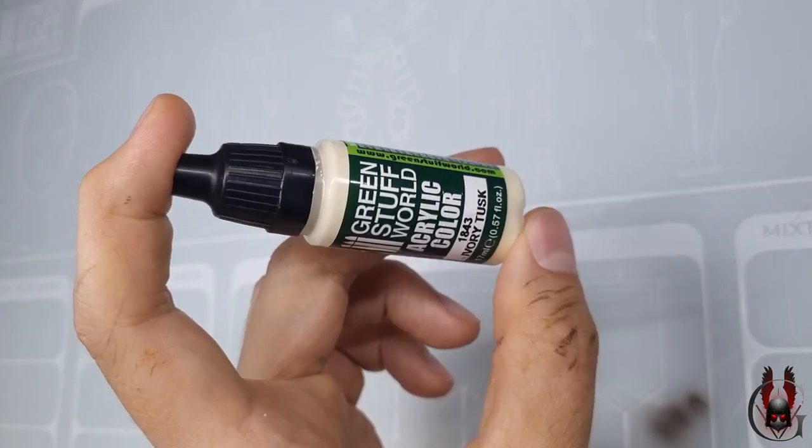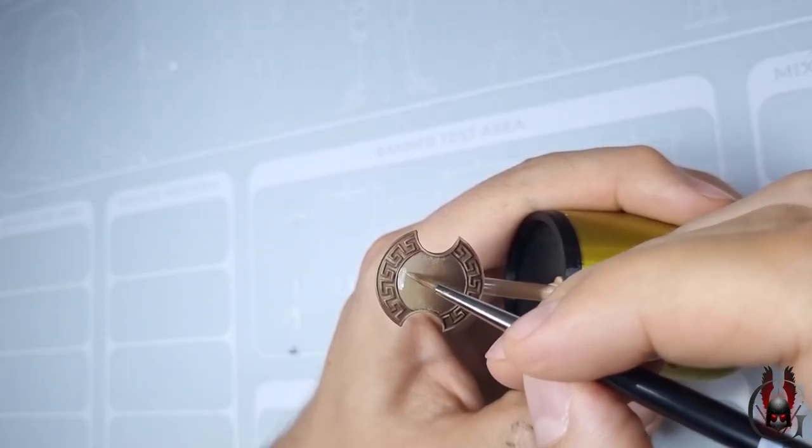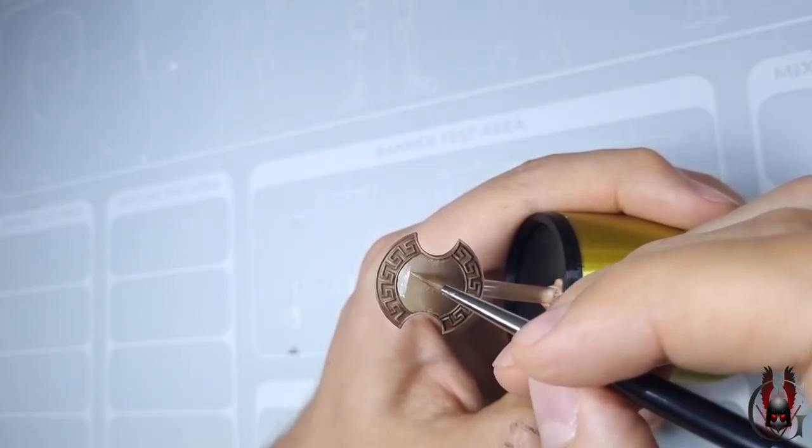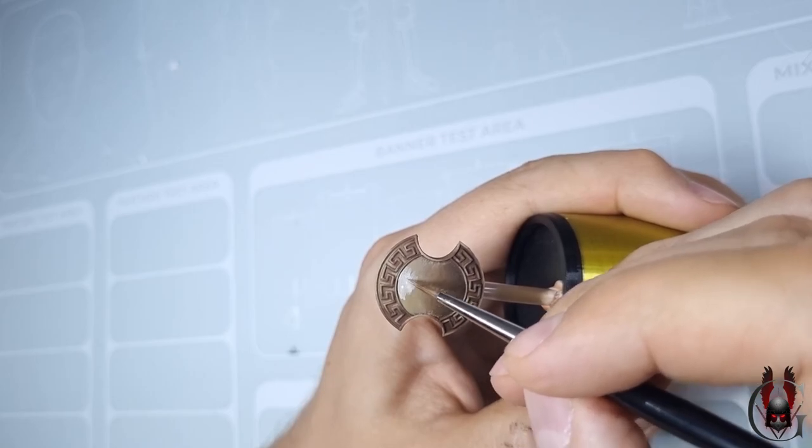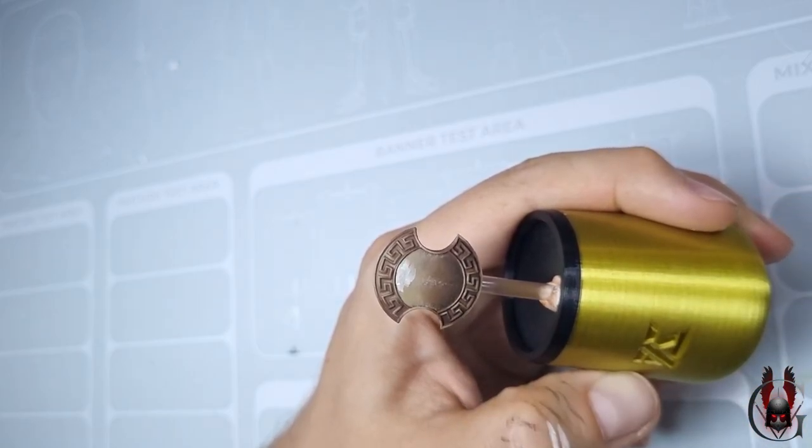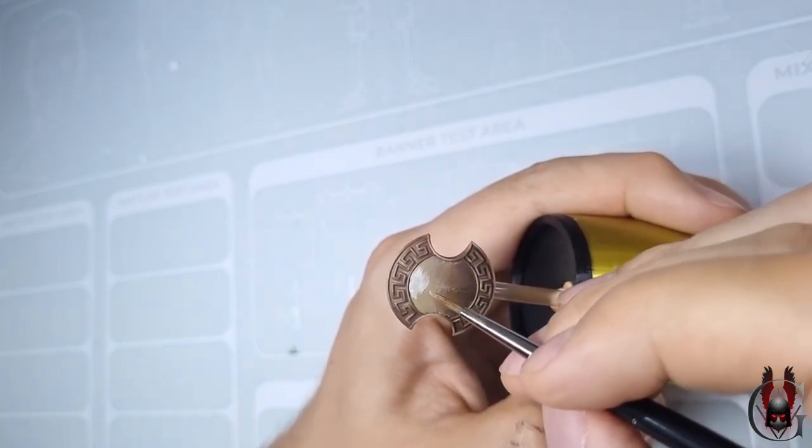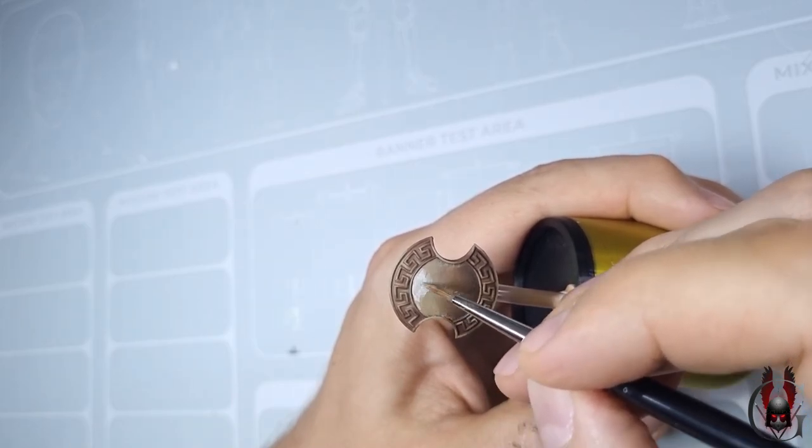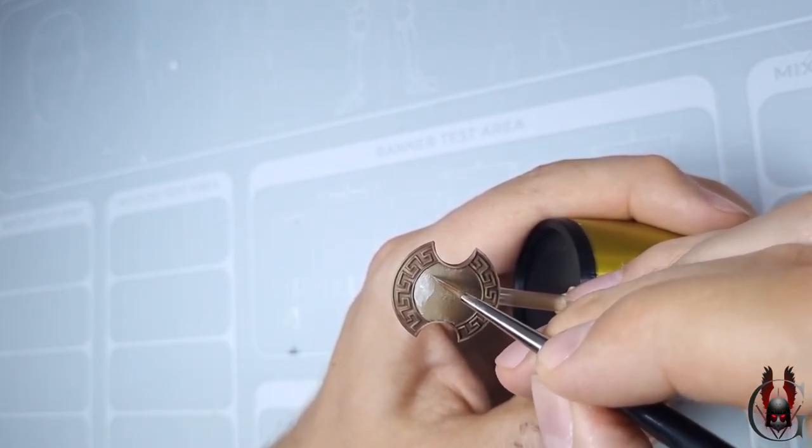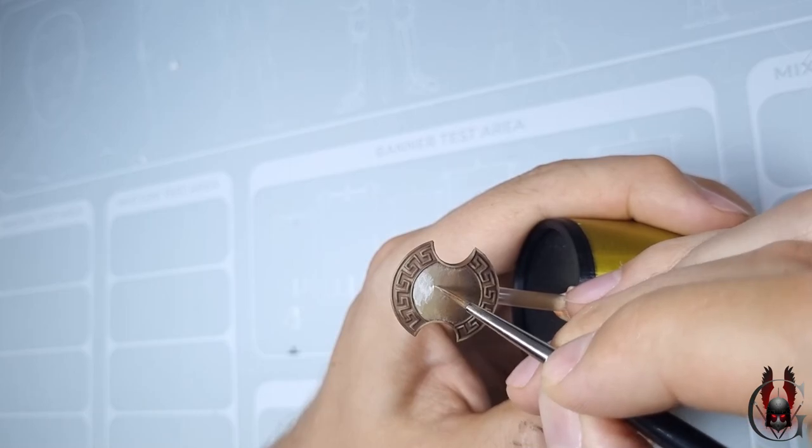The next highlight will be made using the Ivory Tusk paint. Again my main focus is on the upper part of the shield but also on the areas which we highlighted in the previous step. This step is rather rough. I don't pay too much attention to smoothness of the blends. I just keep on painting until I pick all the required areas.